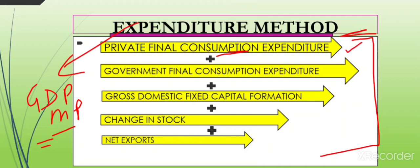The second component is Government Final Consumption Expenditure. This covers all the expenditure made by the government — the government also buys goods and services to provide to the public. All such government spending is added here.